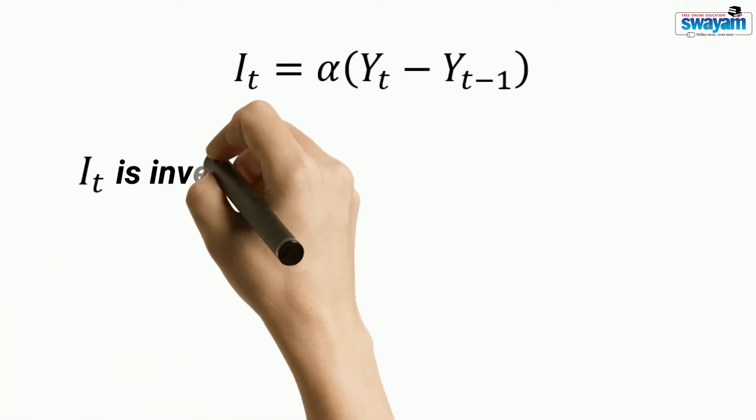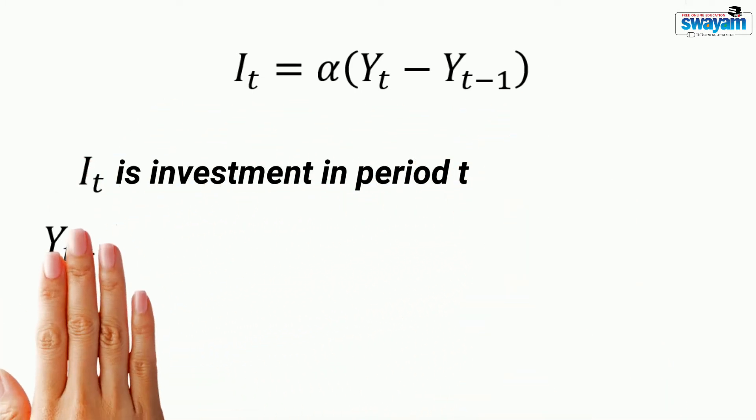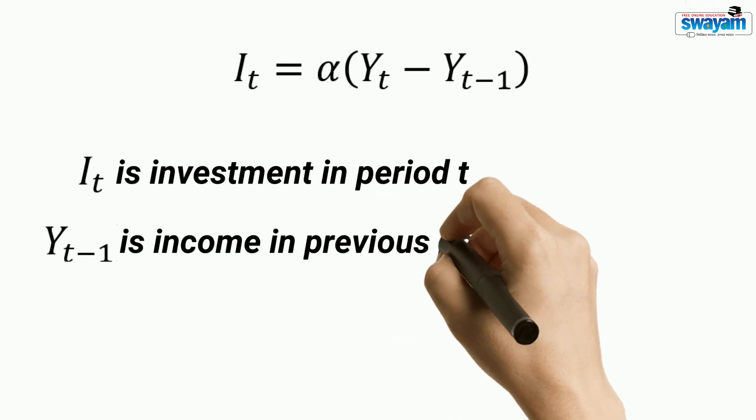IT is investment in period T. YT-1 is income in the previous period. YT is income in current period.